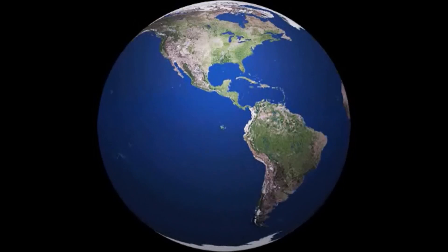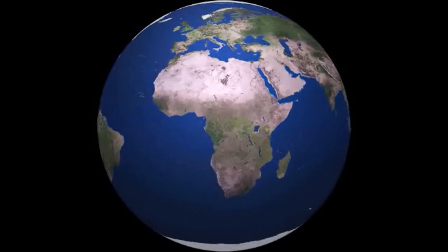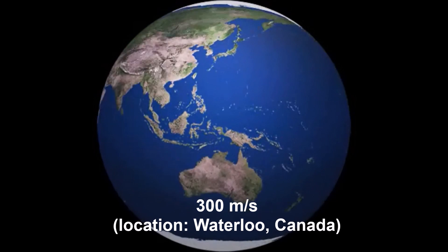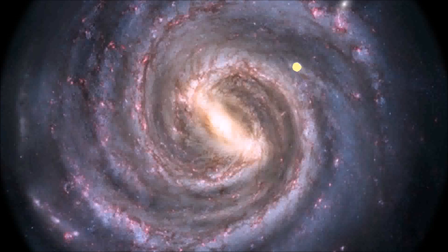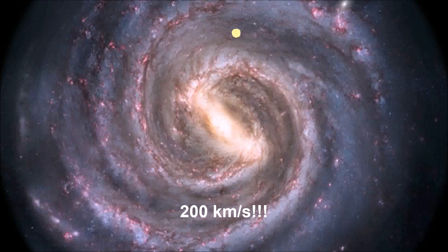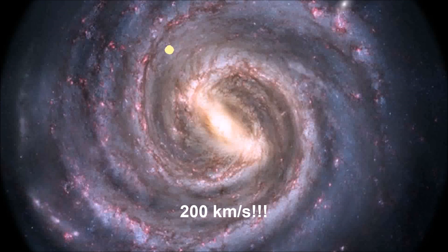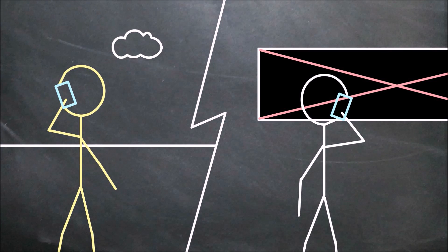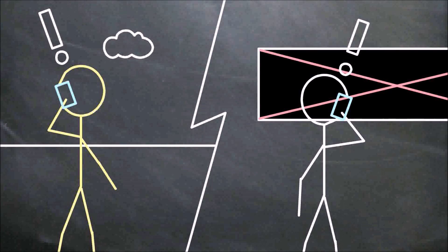But wait, isn't that ground beneath your feet spinning around the earth at over 300 meters every second? And isn't the earth orbiting around the sun at around 30 kilometers per second? And isn't the sun moving around the center of the Milky Way at over 200 kilometers per second? And yet not you, nor your friend, even notice that you're both moving so fast.